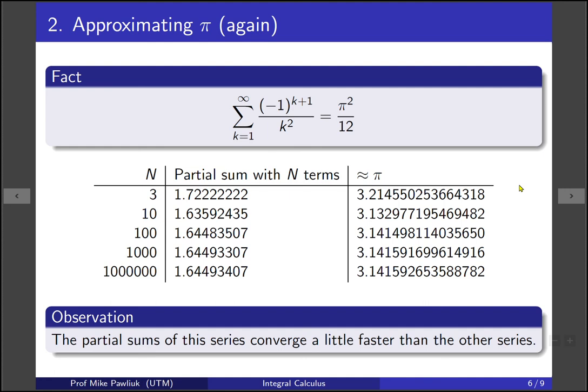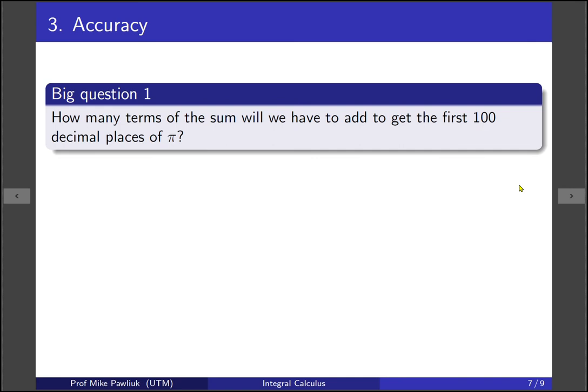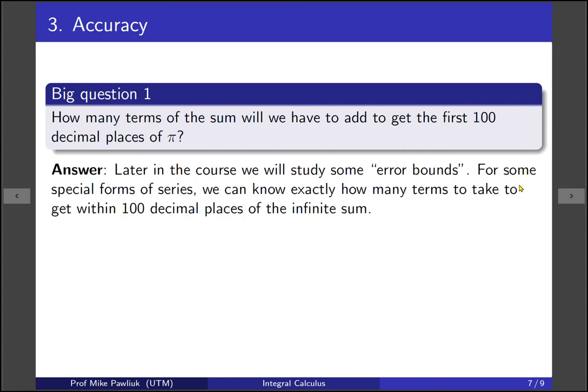So the observation here is that the partial sums of this series are converging a little bit faster than the other series. So this leads us to a couple questions. So our first big question is, how many terms of a sum do you have to add to get the first 100 decimal places of pi correct? So the answer is going to come a little bit later in the course. Later in the course, we're going to study something called error bounds, which is exactly answering this question. How many terms do we have to take to get a certain amount of accuracy?